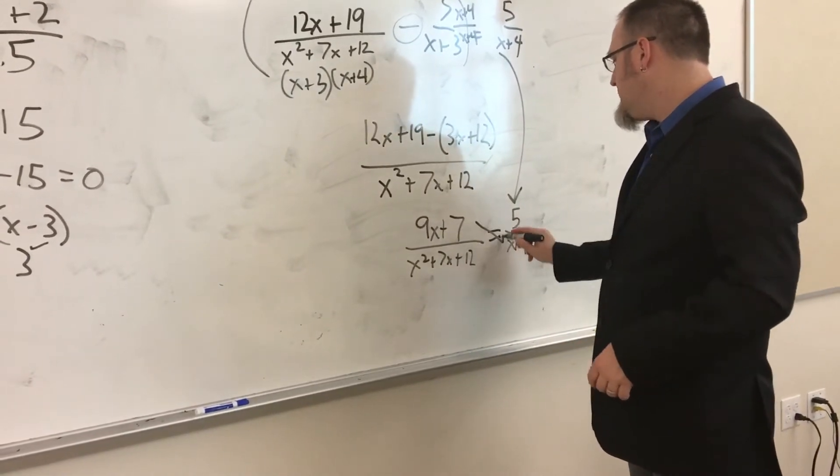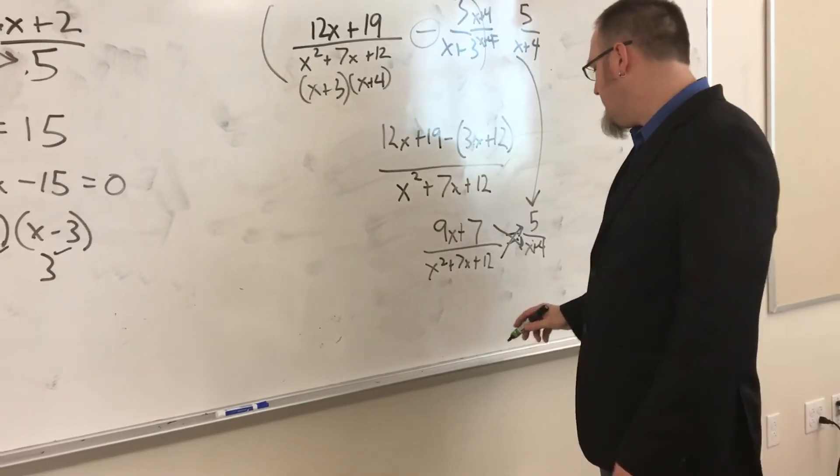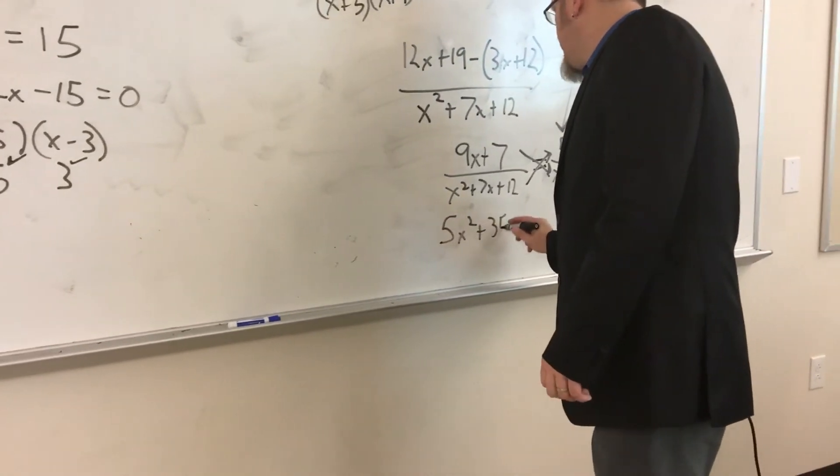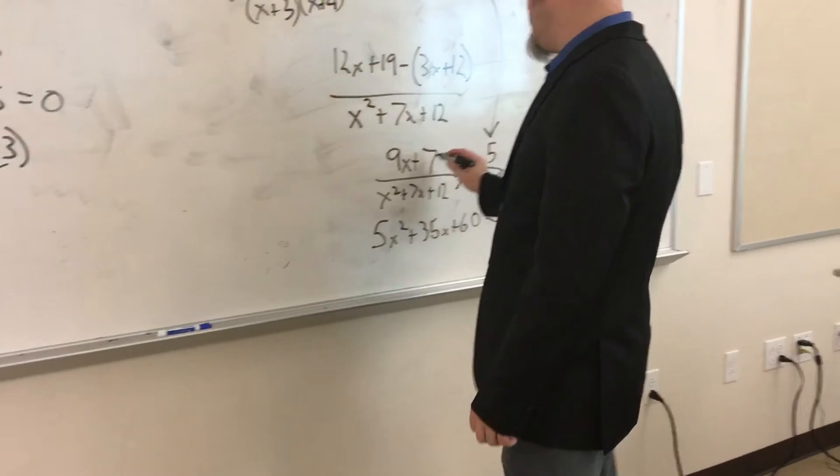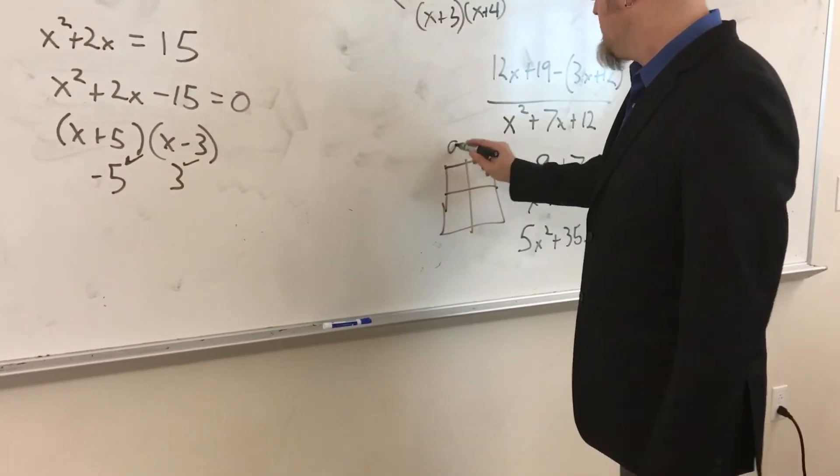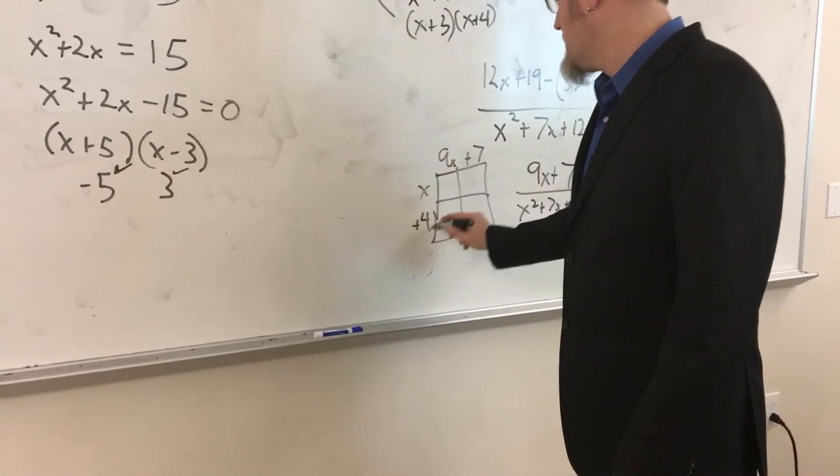So I need to now cross multiply. I'm just going to distribute that 5. So that gives me 5x²+35x+60, and that's going to be equal to, and I need to foil these or work them out in the boxes. I'm going to work them out in the boxes. That's (9x+7) times (x+4).